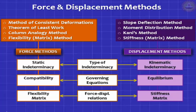Broadly, you have to look at the type of indeterminacy — static indeterminacy for force methods and kinematic indeterminacy for displacement methods. The unknowns are displacements in displacement methods and forces in force methods. The governing equations are equilibrium equations in displacement methods, whereas they are compatibility equations in force methods. The equations are formulated using a stiffness formulation, giving a stiffness matrix in displacement methods, and a flexibility matrix in force methods.